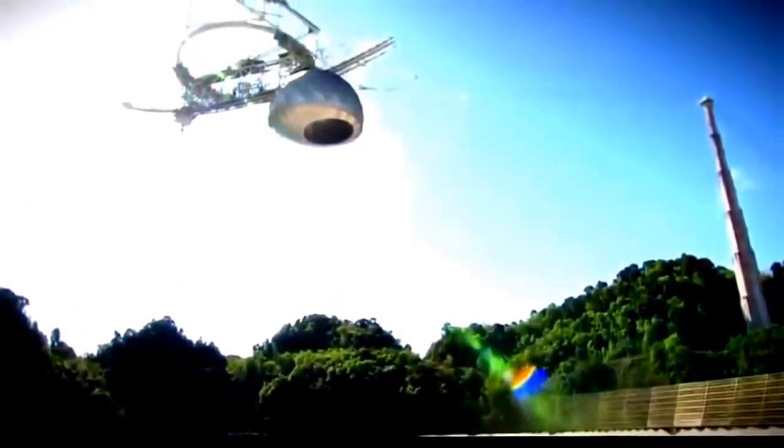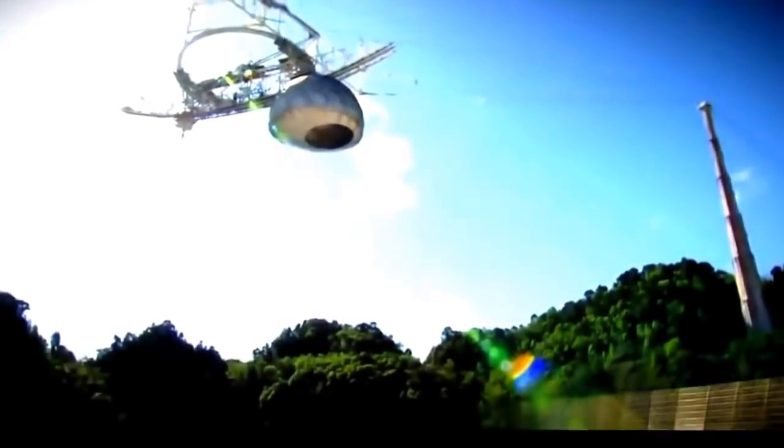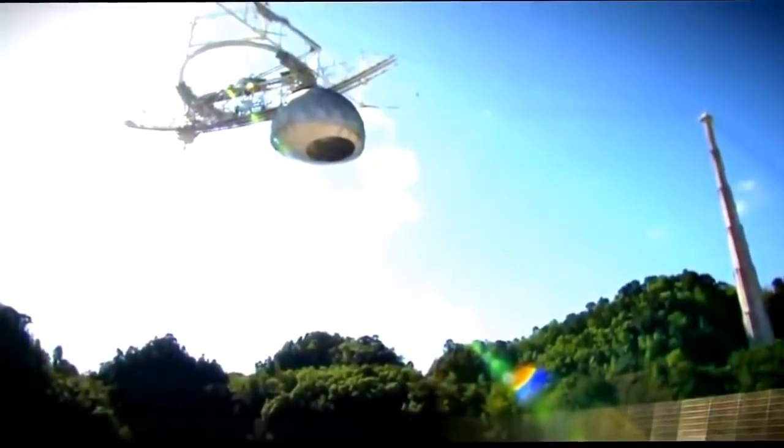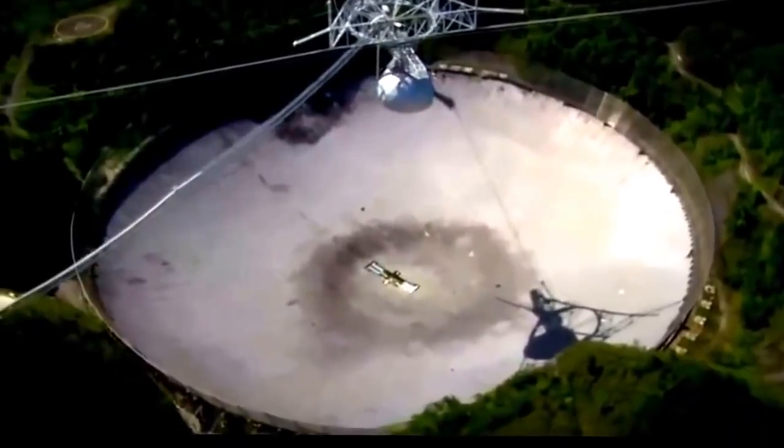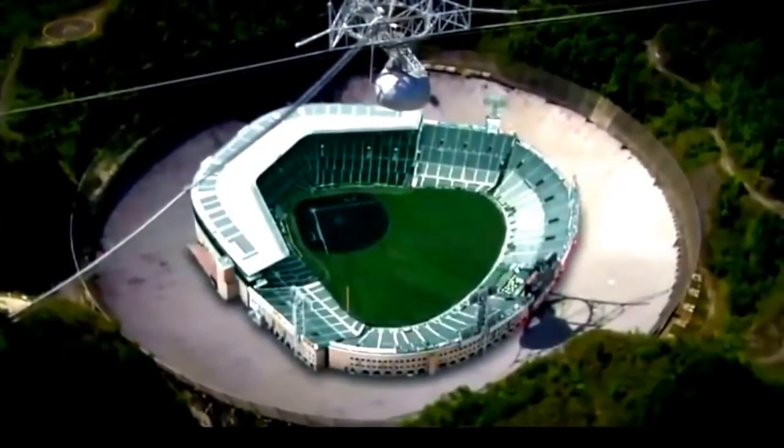With the dish antenna 305 meters across, this is the world's largest radio telescope. Compare that dish antenna to a baseball stadium. The stadium fits in with room to spare.